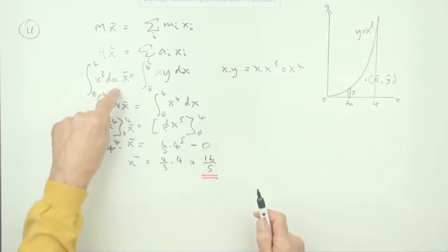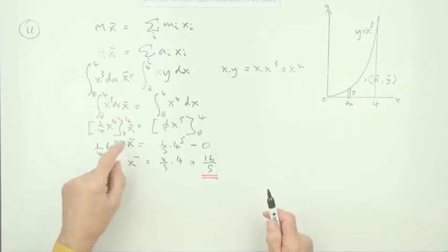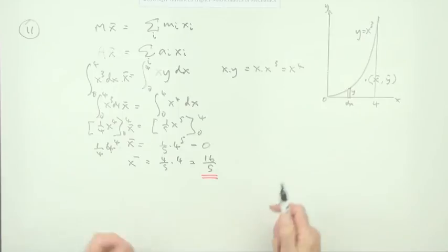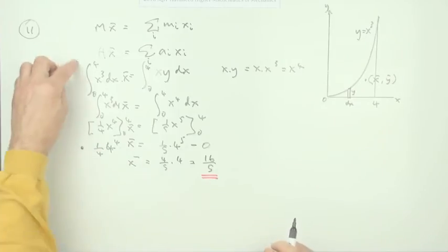Now there was actually a mark for working out the value of this. A quarter of 4 to the power 4, which is obviously 4 to the power 3, which is 64. But you don't actually need it. So I'll just put that mark for evaluating or working out the area.